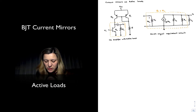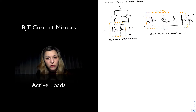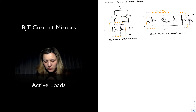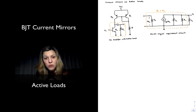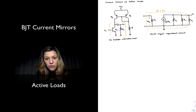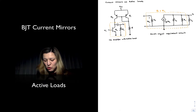The resistance looking at the collector of transistor Q0, which is basically the common emitter amplifier, instead of being RC, is now the internal output resistance r_o of transistor Q2. Because those internal output resistances tend to have very large values, the gain of this common emitter amplifier is going to be potentially very large.